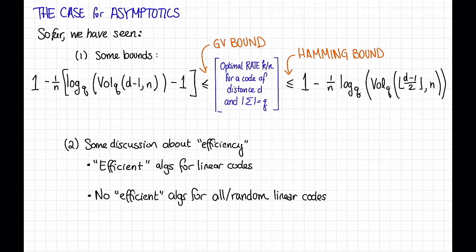First, we've seen a couple of bounds. We saw the GV bound and the Hamming bound. These bounds said that the optimal rate, k over n, for a code with distance d and alphabet size q is bounded above by some ugly formula and bounded below by some other ugly formula.